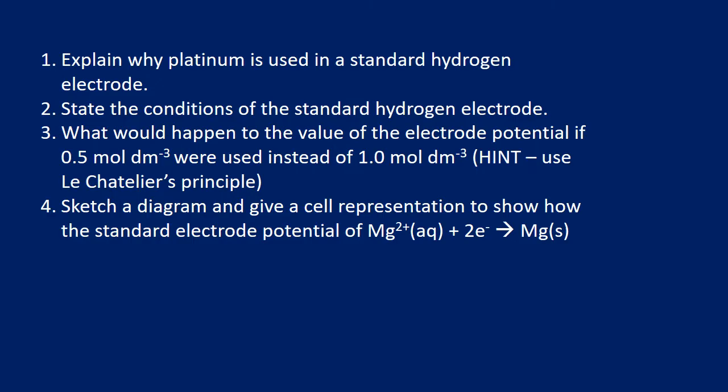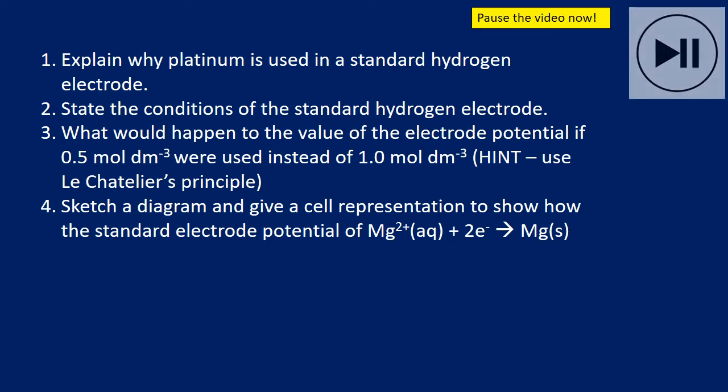Here are some questions to have a go at — questions three and four may be tricky, so pause the video and have a go before unpausing. Question one: why is platinum used? Platinum provides a surface for the transfer of electrons to take place at the electrode. It is also a good conductor, and importantly it is inert — it won't react or corrode.